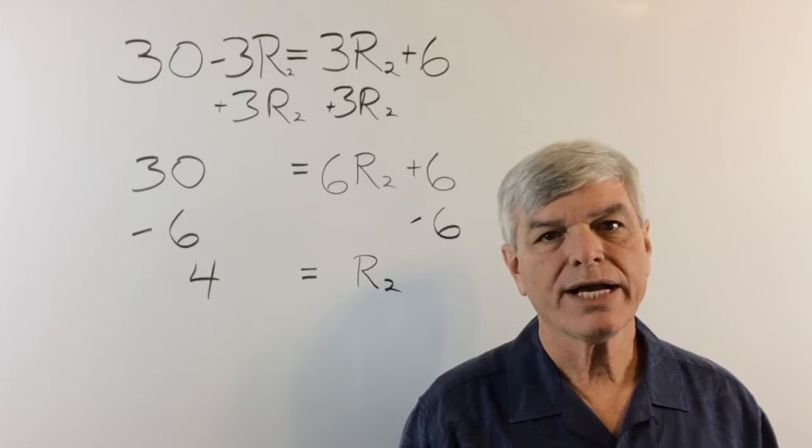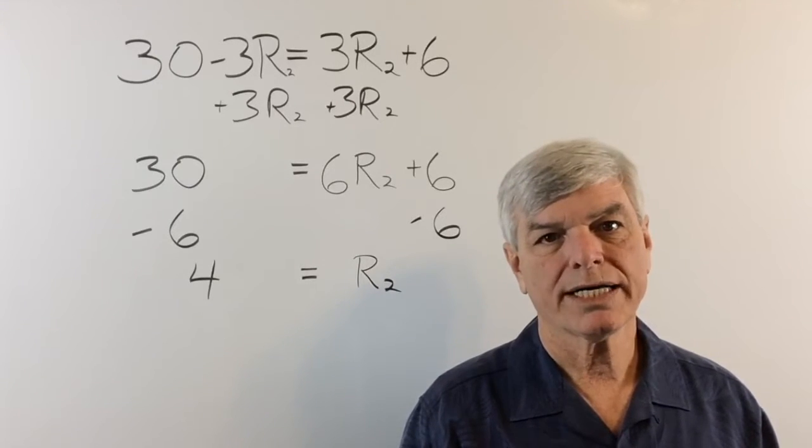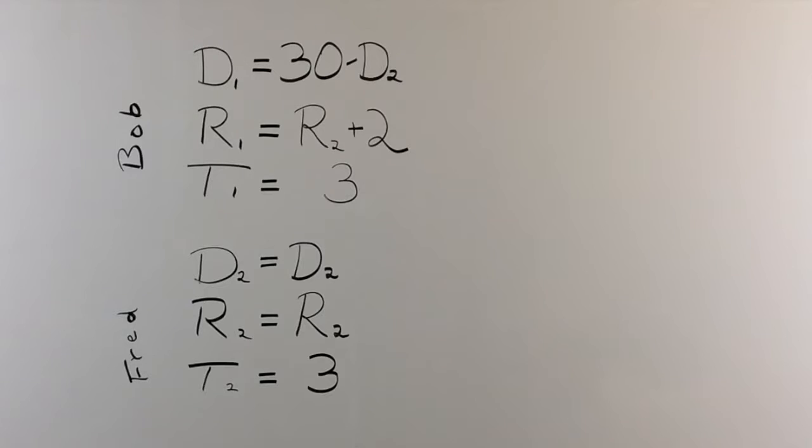Let's see how fast Bob was walking. Let's go back to the grid. Put that 4 in for Fred. Bob is Fred plus 2. That would be 6. And that's your answer. Bob is walking at 6 miles per hour. And Fred is walking at 4 miles per hour. Make sure you put that miles per hour in there, or MPH, something like that.